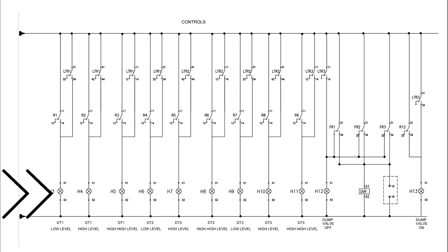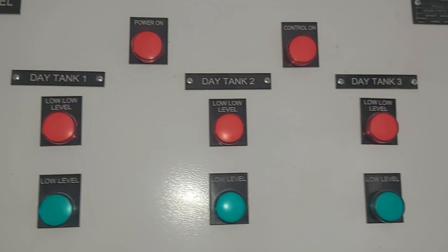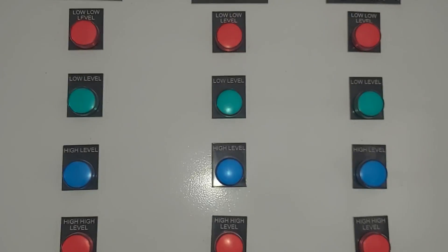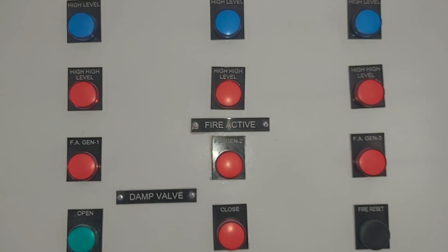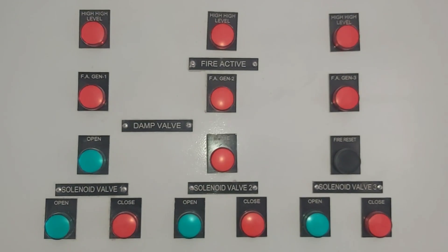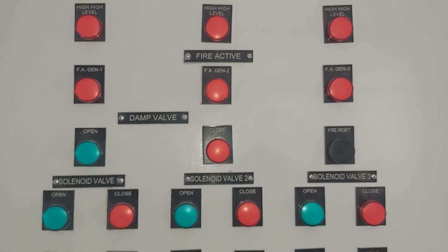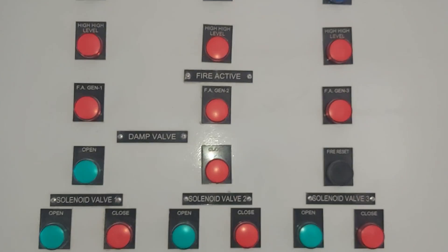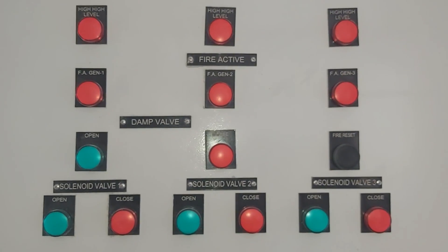The control circuit for indicators uses three indicators per tank — for three tanks that gives nine indicators total: low level, high level, and high-high level. There is also a low-low level indicator in this panel, as well as indicators for the dump valve and solenoid valves.